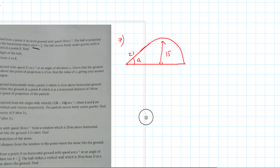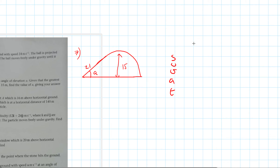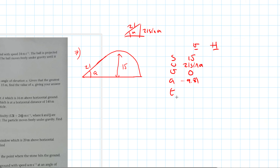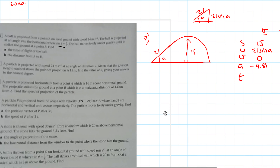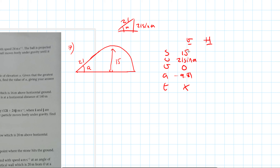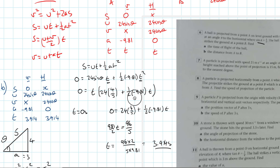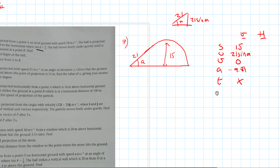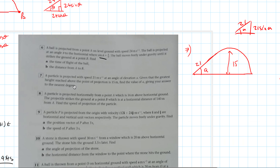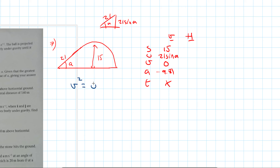Writing out SUVAT for vertical and horizontal components: vertically, S = 15 (max height), U = 21 sin A, V = 0 (at maximum height), a = −9.81, T = unknown. Since we have three known values and one unknown, and don't need time, we use v² = u² + 2as: 0² = (21 sin A)² + 2(15)(−9.81).